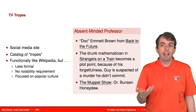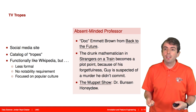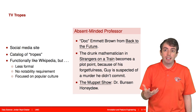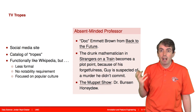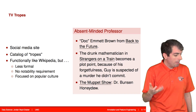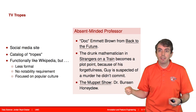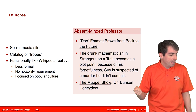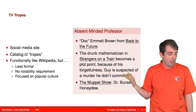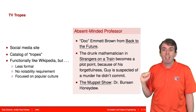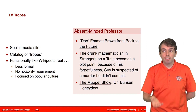So can we build a classifier that can detect when a sentence has a spoiler or not? The way we're going to try to do that is to use a resource called TV Tropes. TV Tropes is a website that has pages about particular characters, TV shows, and tropes that list examples from popular culture. For example, there's a trope called the absent-minded professor. Examples include Doc Brown from Back to the Future, the drunk mathematician on Strangers on a Train, and Dr. Bunsen Honeydew from The Muppet Show. The page lists all of these examples, and there are also pages for individual TV shows.